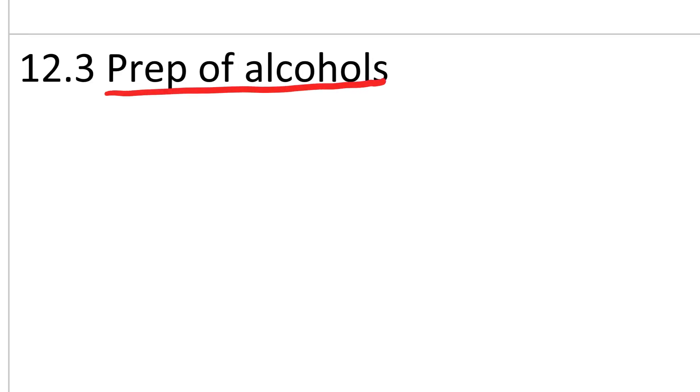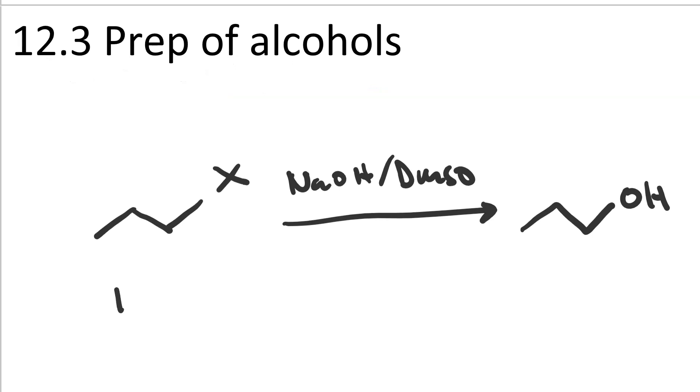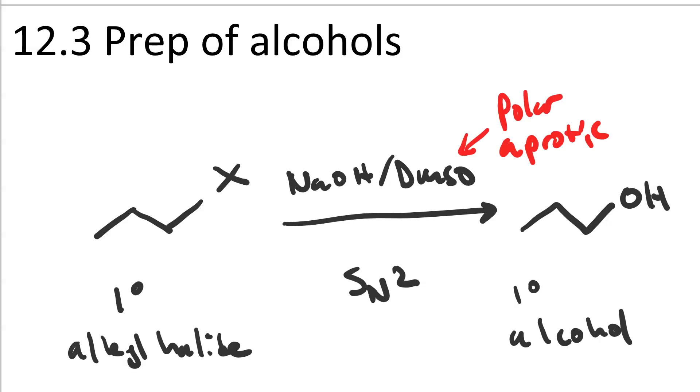Preparation of alcohols. If we take a primary alkyl halide and react it with sodium hydroxide in DMSO, which is a polar aprotic solvent, we get SN2 substitution and end up with the primary alcohol. That's a way to prepare alcohols via substitution.